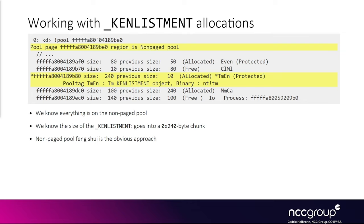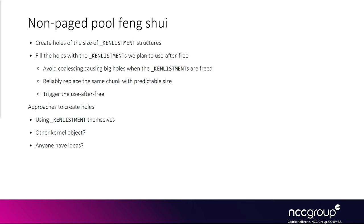You can't inspect this state from userland since it's all kernel memory, so you just won't know it's happening. This makes exploitation really unpredictable and unstable. The solution is to use heap feng shui to blindly predict the layout in a relatively controllable way. From WinDbg output we can see that a k-enlistment structure is allocated into a chunk of size 0x240 hex bytes.